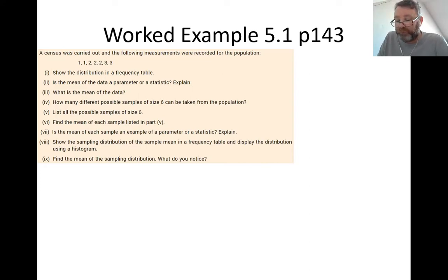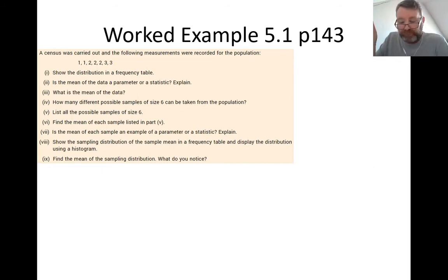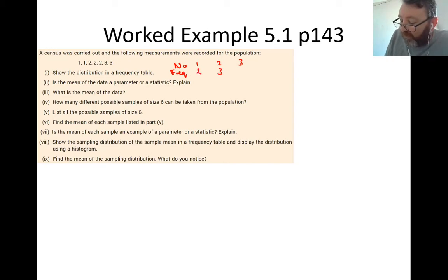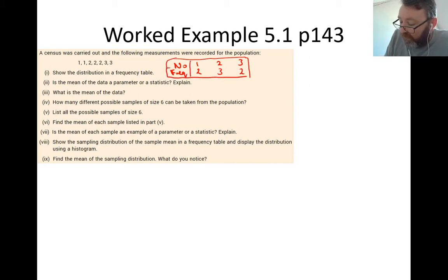Part one asks you to show the distribution in a frequency table. The numbers you have are 1, 2, and 3. The frequency of each: 1 appears twice, 2 appears three times, and 3 appears twice. So that is your frequency table — box it off nicely if you like.